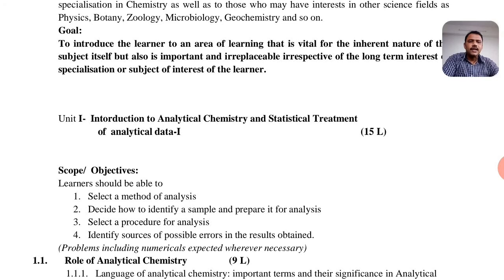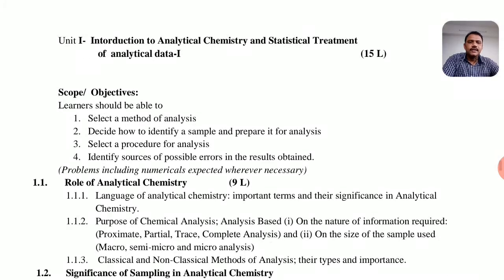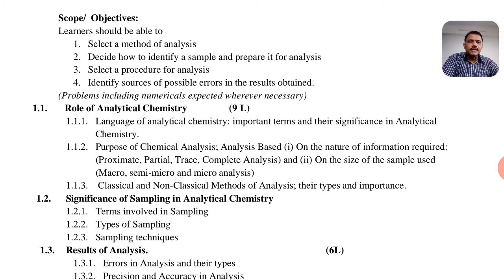There are a total of 3 units in semester 3 analytical chemistry. Unit 1 is Introduction to Analytical Chemistry and Statistical Treatment of Analytical Data. This unit covers the role of analytical chemistry, which includes the language of analytical chemistry, important terms and their significance. It also covers the purpose of chemical analysis based on the nature of information required: proximate analysis, partial, trace, and complete analysis. The second classification is based on the size of sample used: macro, semi-macro, and micro types of analysis. It also covers classical and non-classical methods of analysis, their types and importance.